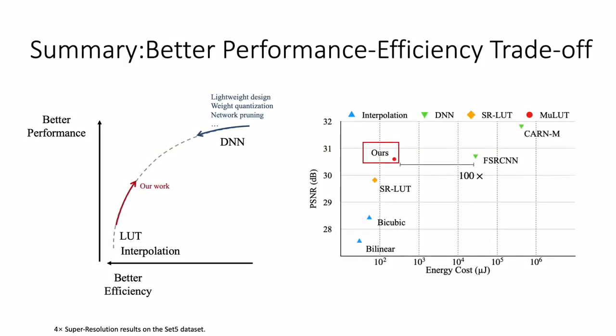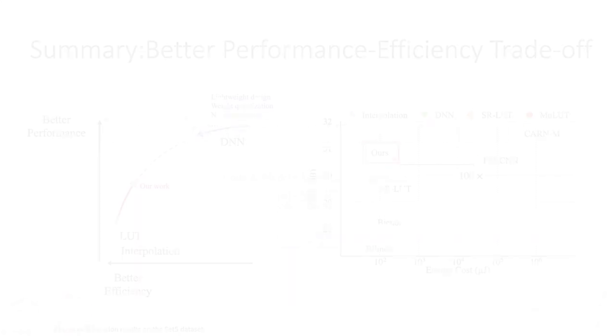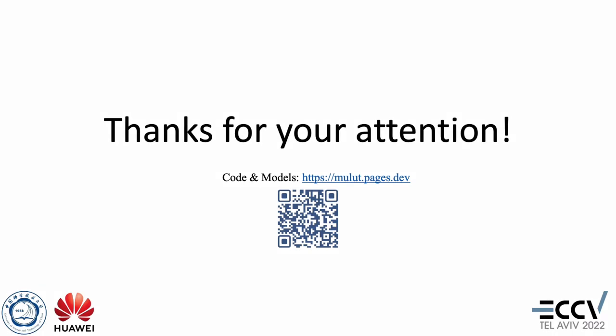In summary, MuLUT obtains a better performance-efficiency trade-off, showing its versatility to serve as a universal caching framework and an efficient solution to avoid deploying heavy DNNs on edge devices. The code and trained models are available on our project page. That's all. Many thanks for your attention.